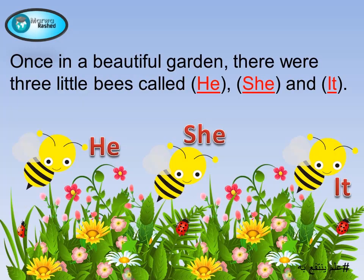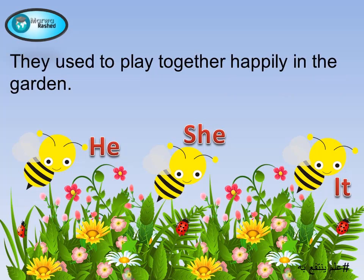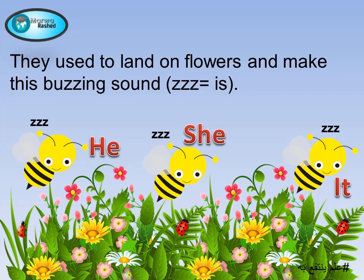Once in a beautiful garden, there were three little bees called he, she, and it. They used to play together happily in the garden. They used to land on flowers and make a buzzing sound.